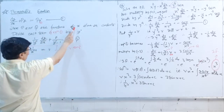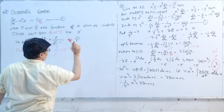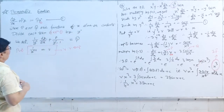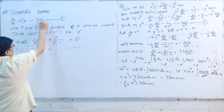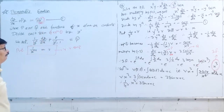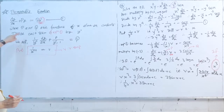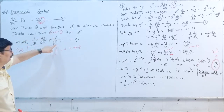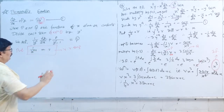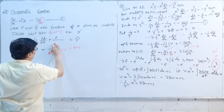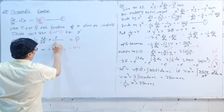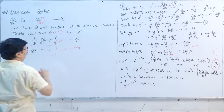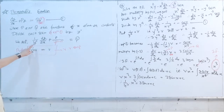Here p and q are functions of x alone or constants. In such a case, what we do is divide the total equation by yⁿ. After dividing, we get (1/yⁿ)·(dy/dx) plus p·y^(1-n) equals q. Here the power drops: if we had yⁿ, it becomes y^(n-1), and 1/y⁴ becomes 1/y⁵, etc.